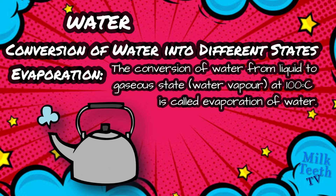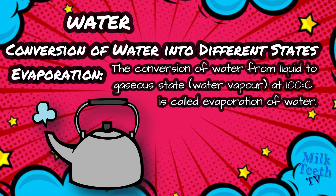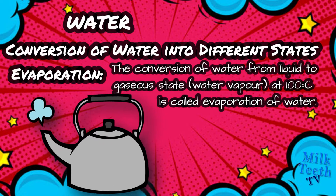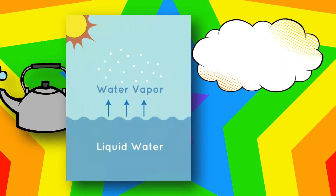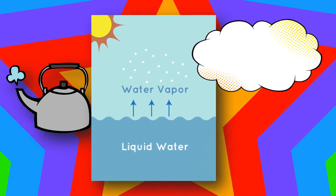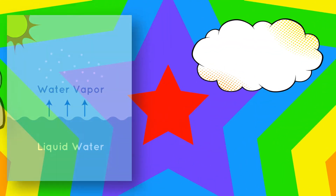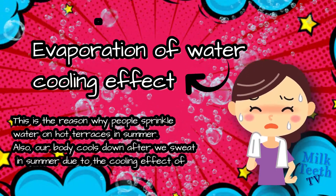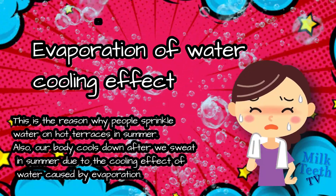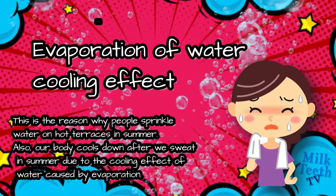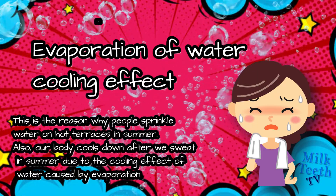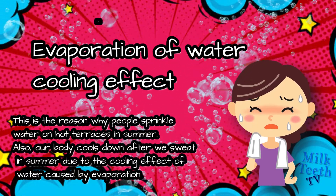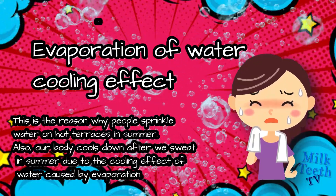The conversion of water from liquid to gaseous state, i.e. water vapour, at 100°C is called evaporation. An important fact: evaporation of water has a cooling effect. This is why people sprinkle water on hot terraces in summer, and our body cools down after we sweat due to the cooling effect caused by evaporation.